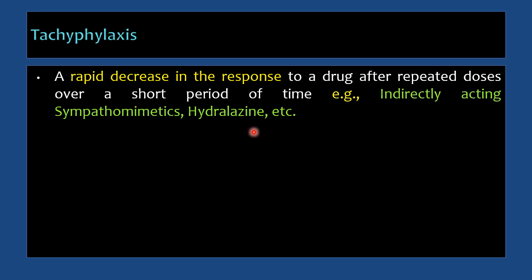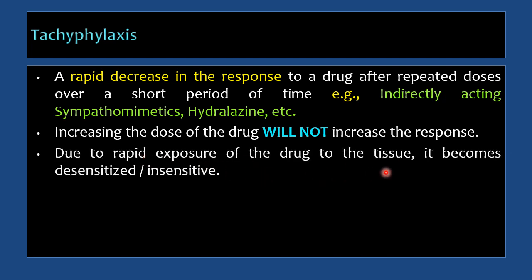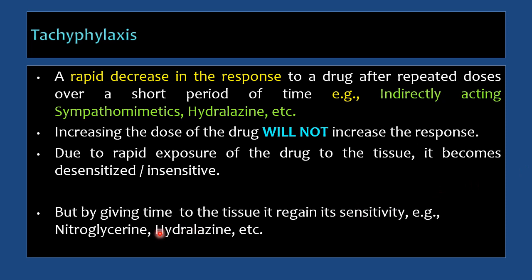Hydralazine is a vasodilator useful in hypertension; if used repeatedly with short intervals, its response decreases rapidly. The common reason is rapid exposure of the drug to the tissue, which becomes desensitized or insensitive. Increasing the dose will not solve the problem as it does with tolerance — instead a proper interval must be given to allow the tissue to regain sensitivity. Nitroglycerin shows both tachyphylaxis and tolerance, and in both cases dose intervals are required.